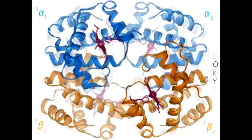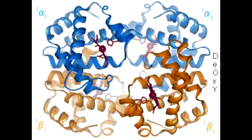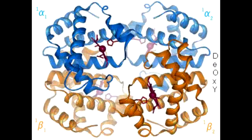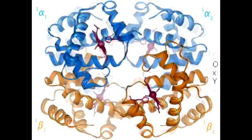Describe these two forms' affinity to oxygen. The taut form or T form has low affinity for oxygen, whereas the relaxed form has a high affinity for oxygen, about 300 times higher.